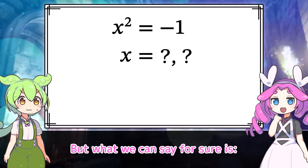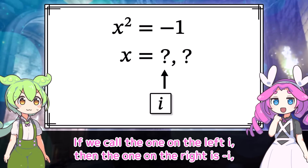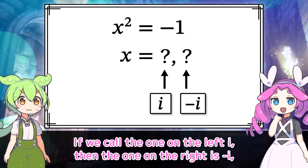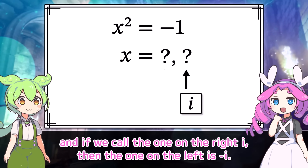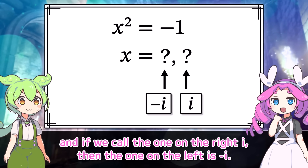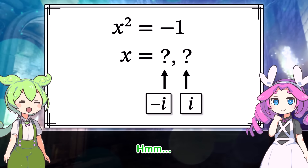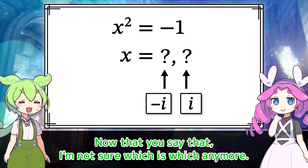But what we can say for sure is: if we call the one on the left I, then the one on the right is negative I. And if we call the one on the right I, then the one on the left is negative I. Now that you say that, I'm not sure which is which anymore.